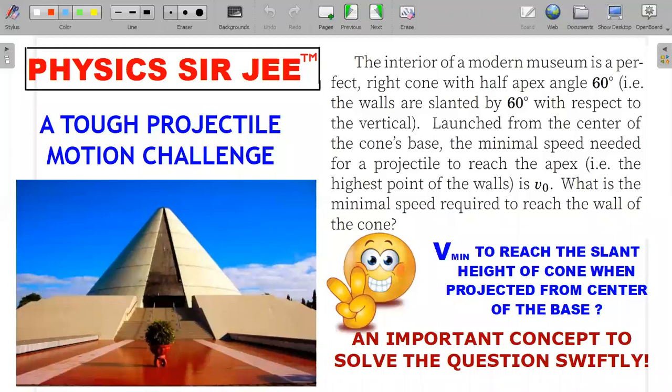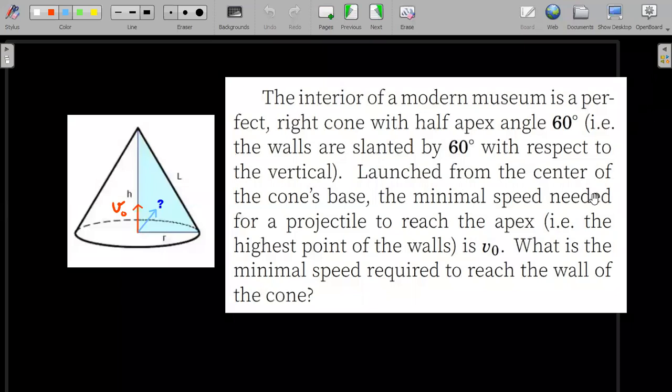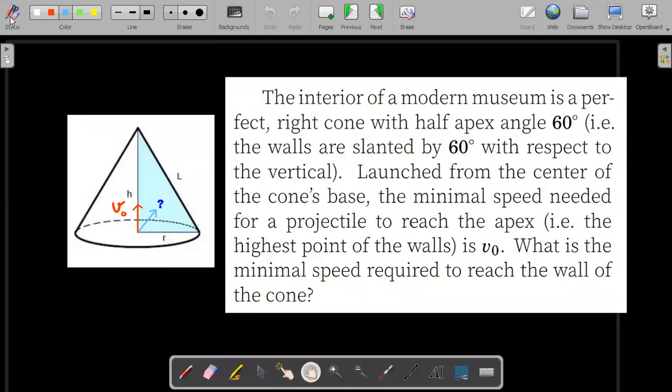So without much further ado, let me present the formal wording of the question. The interior of a modern museum is a perfect right cone with a half apex angle of 60 degrees - that's the semi-vertical angle of that conical museum. It's a hollow cone. Launched from the center of the cone's base, the minimum speed needed for a projectile to reach the apex (the topmost point) is V0.